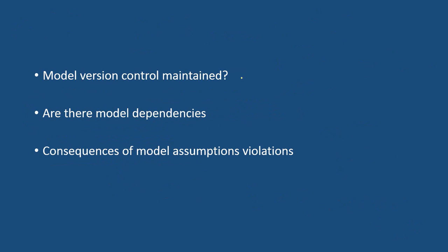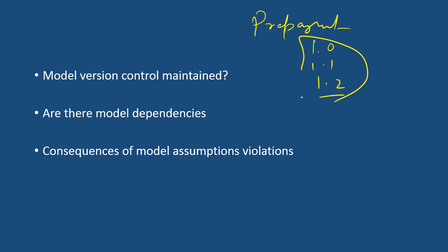Model version control should be maintained. Every model has different versions — for example, a prepayment model could have versions 1.0, 1.1, 1.2, and so on. Version control should be maintained much like code that a developer develops. For every model, one should have a proper model version and it should be well documented in the model document.